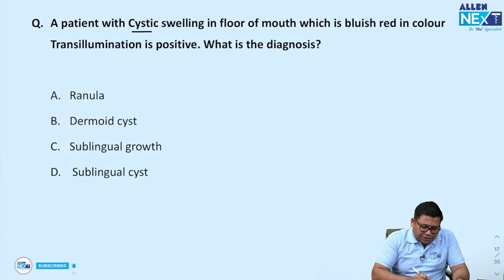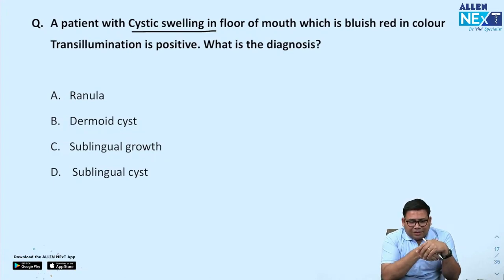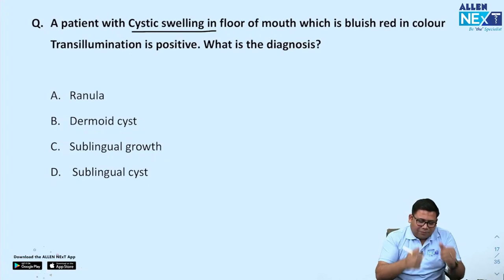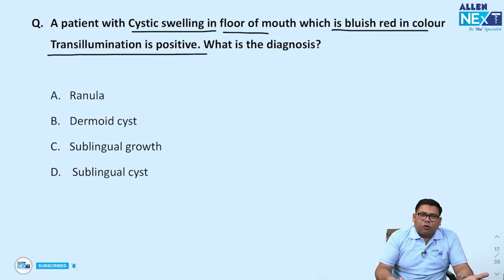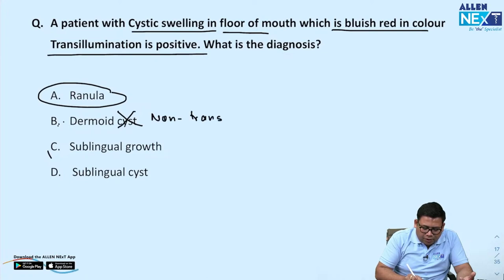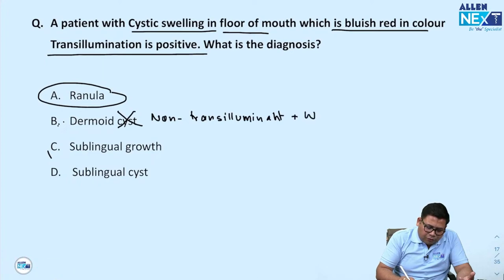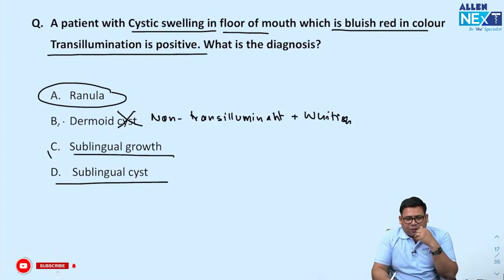Patient with cystic swelling in the floor of the mouth — bluish-red, transillumination positive. This is a ranula. Remember, a dermoid cyst is non-transilluminant and whitish. It is not a sublingual cyst — sublingual cyst is a broader term. The bluish-red transilluminating cyst in the floor of the mouth is a ranula.